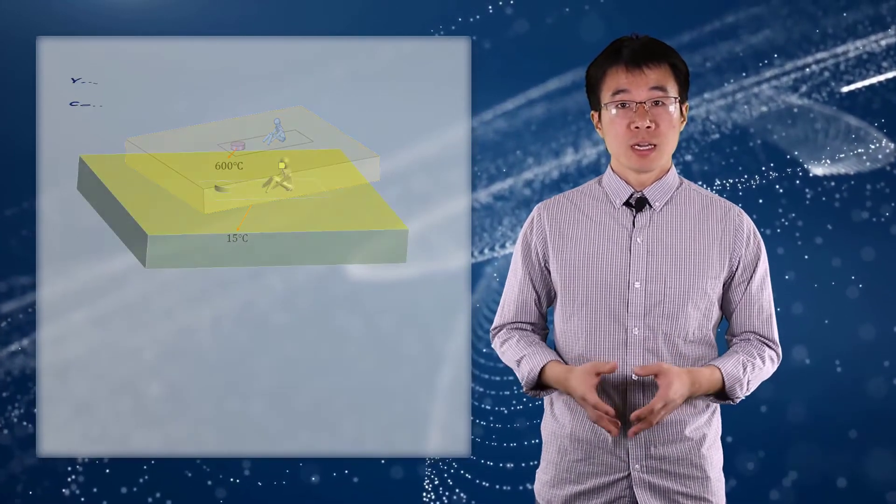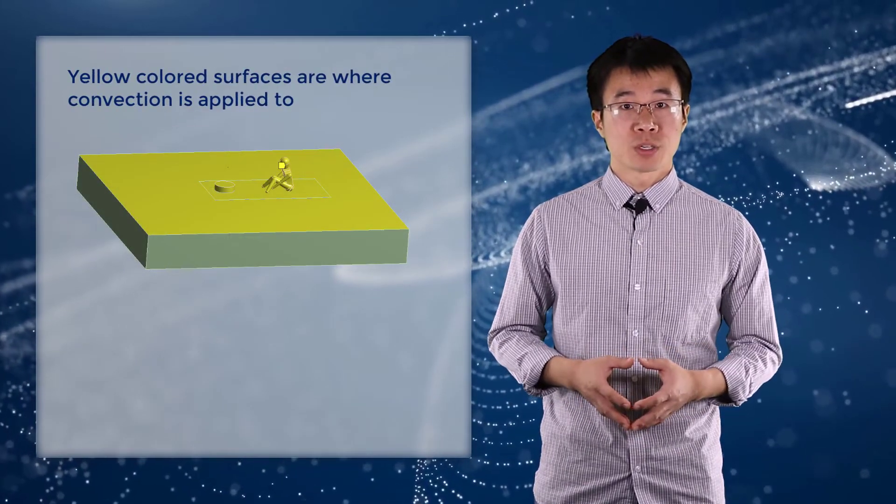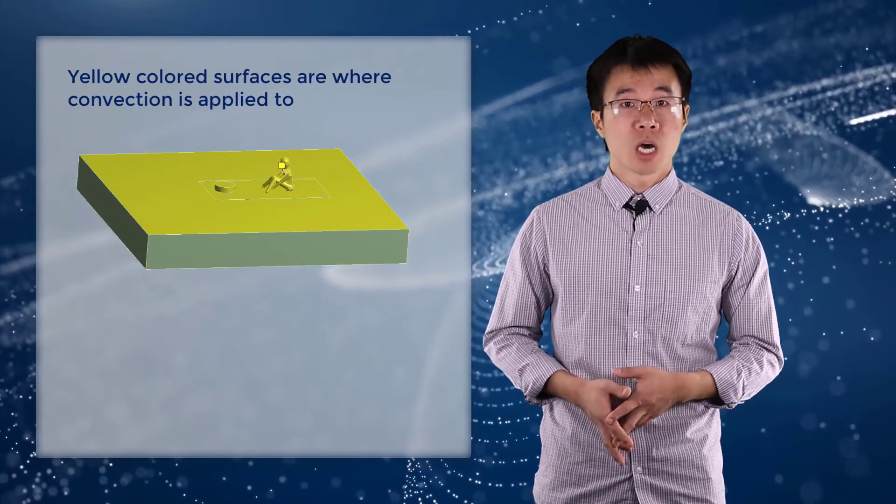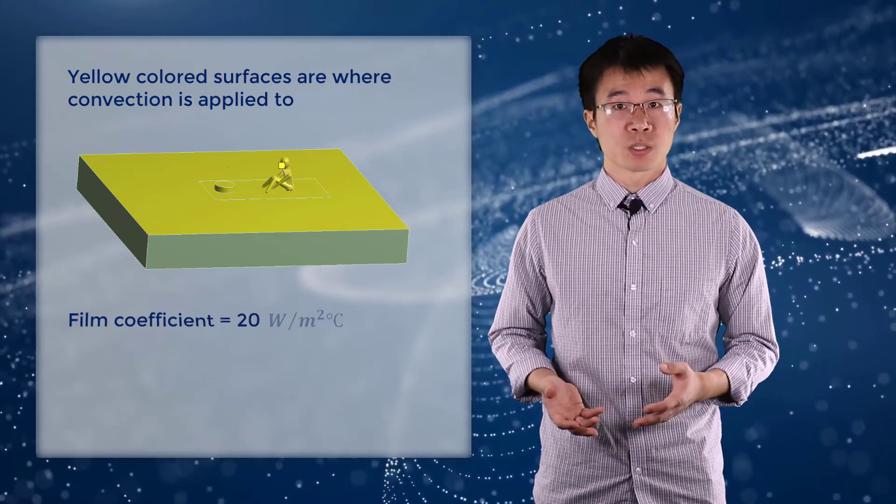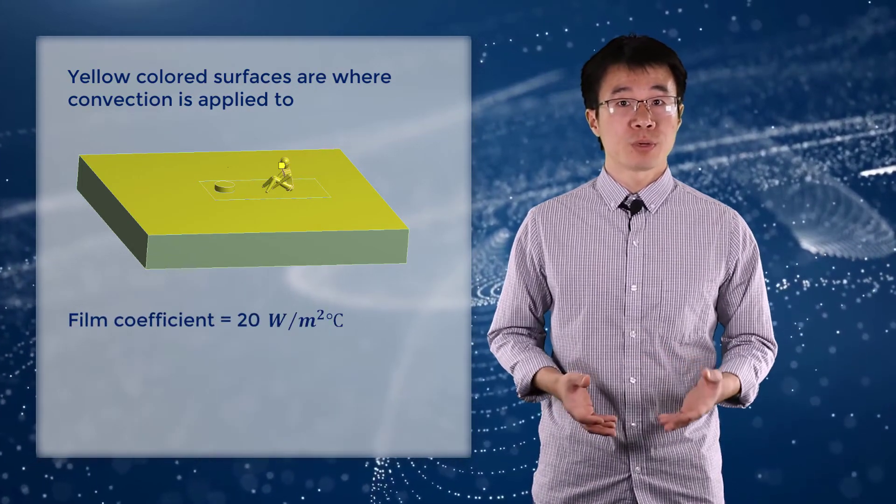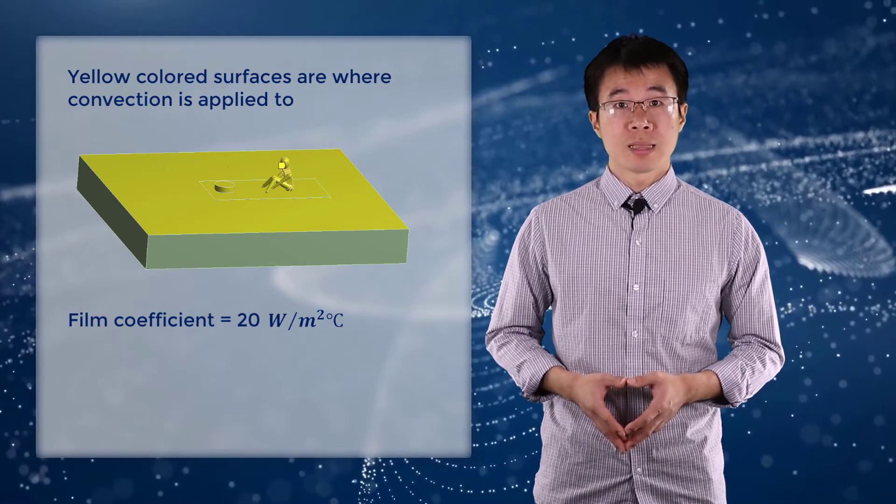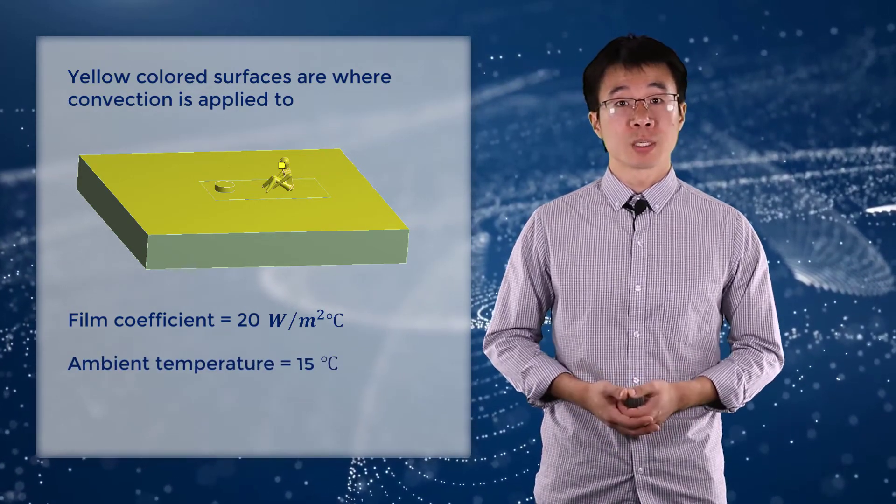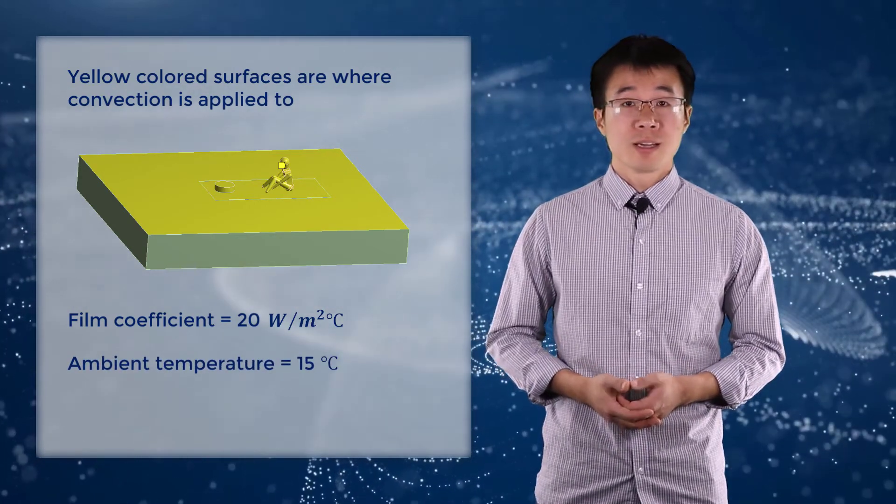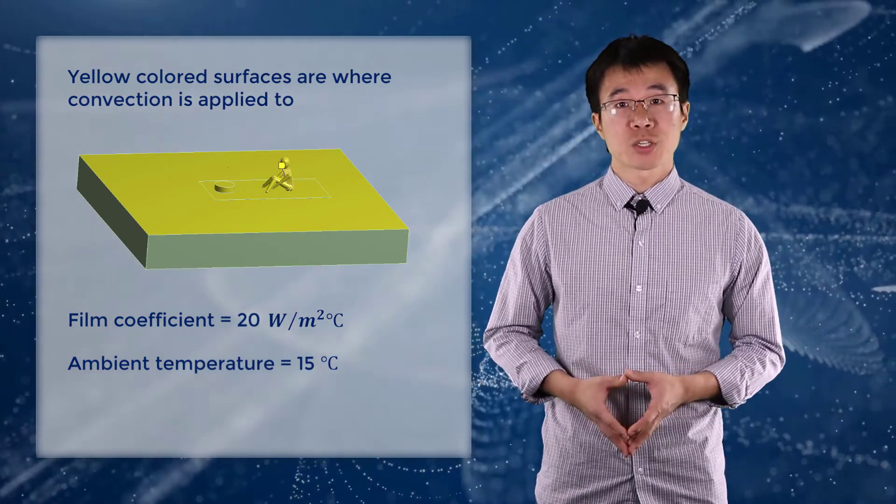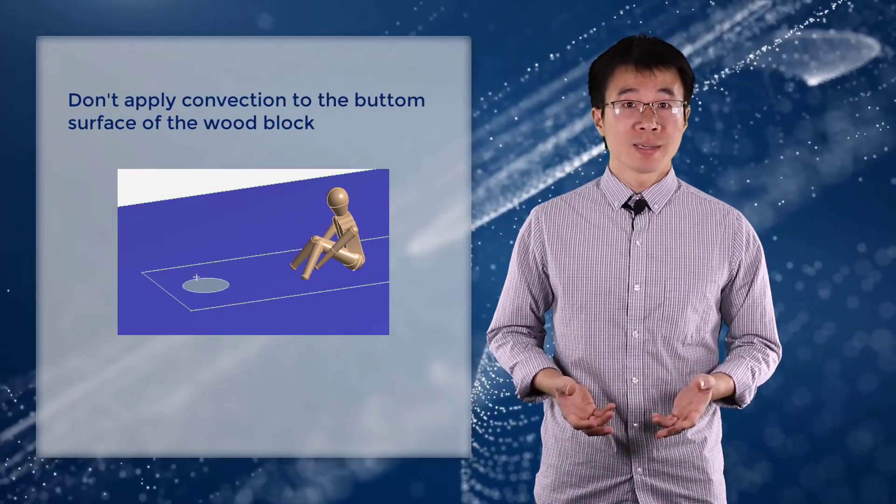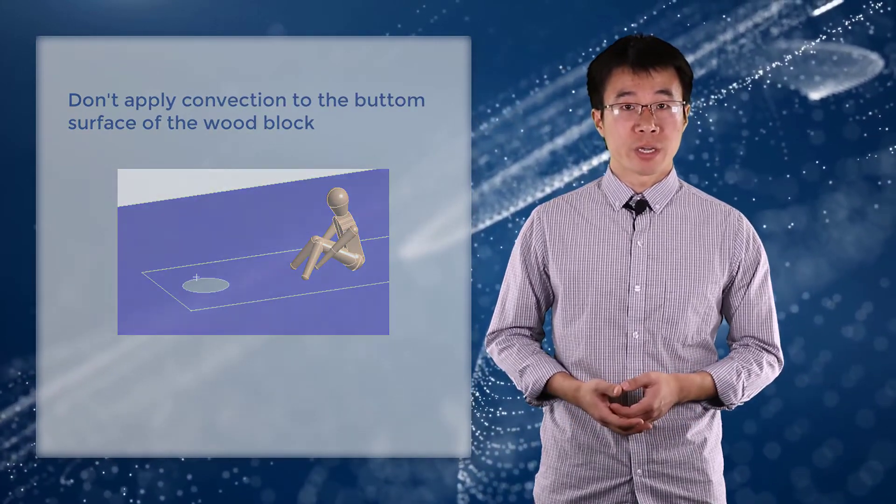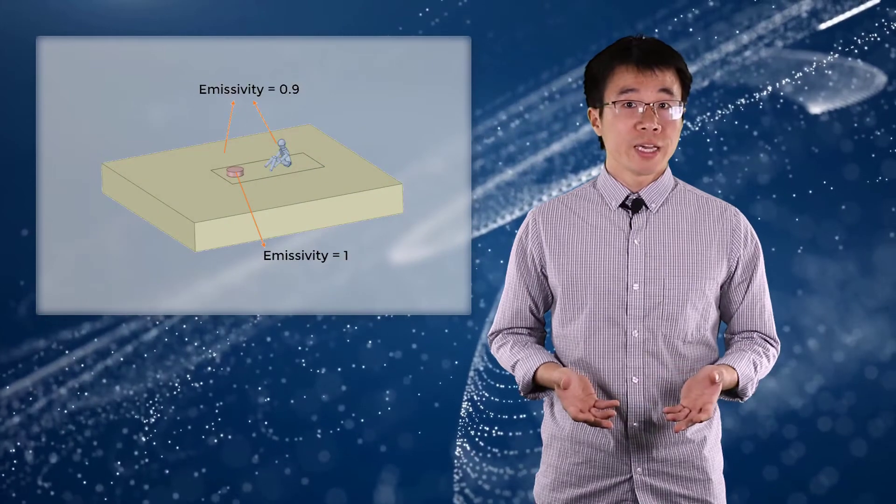For convection, natural air flow is applied to the surface of the person, wood, and the top surface of the ground. A film coefficient of 20 watts per meter square Celsius is used to represent natural air flow, and the ambient temperature is set to 15 degrees Celsius. It's important here not to apply convection to the bottom surface of the wood block and the ground area it covers, because in reality, these areas won't have much air flow.